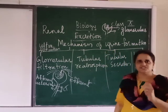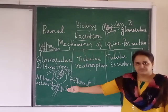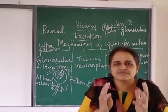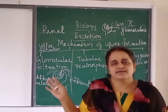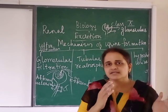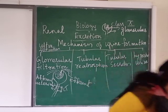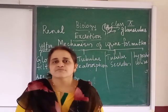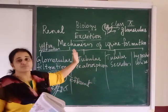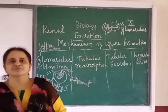The third stage is tubular secretion, where additional waste is secreted back into the tubule from the blood. The fourth and final stage is concentration of urine: the urine, which was very diluted, becomes more and more concentrated — this is hypertonic urine. Whatever is useful is absorbed back into the body, and whatever is waste is sent out through the urine. This is the mechanism of urine formation. You need to write this mechanism and draw the structure of the nephron.